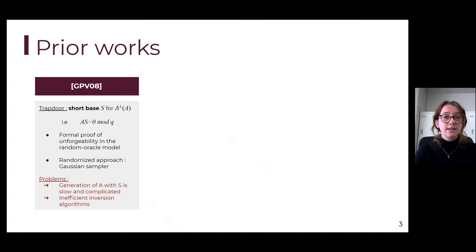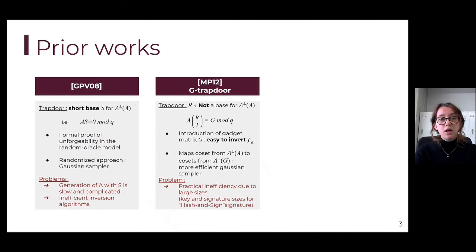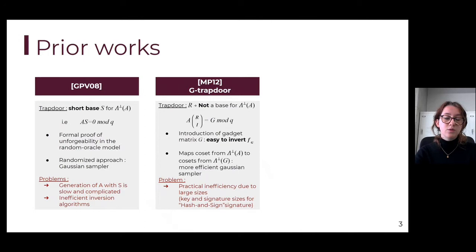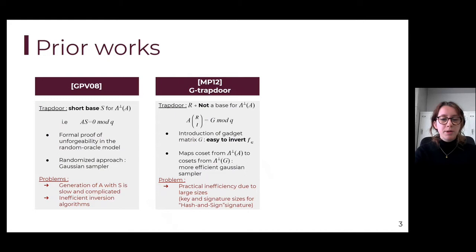In order to optimize this construction, in 2012 a G-trapdoor construction was published. In this construction the trapdoor is no longer a basis for the query lattice. Instead, the trapdoor is information that allows mapping the cosets of the query lattice defined by G to the cosets of the query lattice defined by A. Using this information, we can invert the function defined by A by mapping it to the hash function defined by G, which is easy to invert. This construction added many optimizations compared to the GPV construction; however, it still suffers from practical inefficiency due to large object sizes, which in a hash-and-sign application would mean large public key and signature sizes.